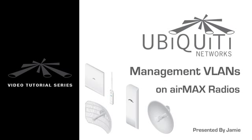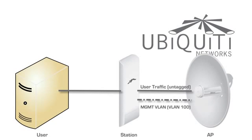In this video, we'll discuss why and how management VLANs are set on AirMax radios. The purpose of a management VLAN is to isolate user traffic from all management traffic. This type of traffic segmentation allows network devices, such as radios, to be accessed only by users specifically authorized to do so. In other words, the management VLAN grants access to configure AirMax radios, while regular user traffic goes untagged since it doesn't belong to the management VLAN.